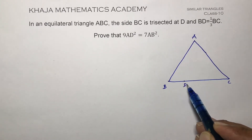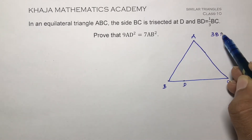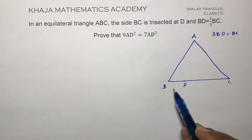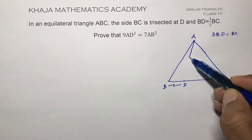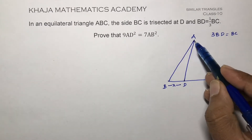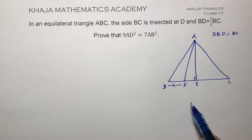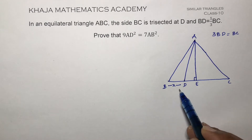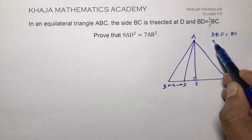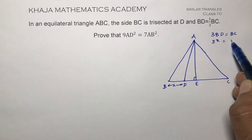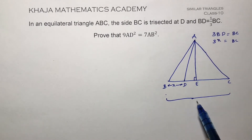If we cross multiply, 3 times BD is BC. So I will consider BD as X. Join AD and draw AE perpendicular to BC. If BD is X, then 3X equals BC, so the value of BC will be 3X.